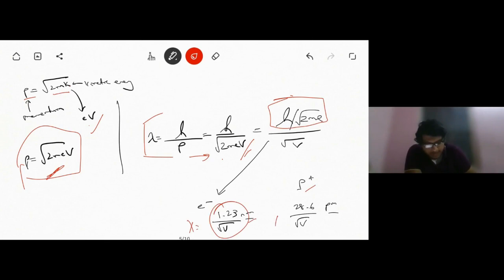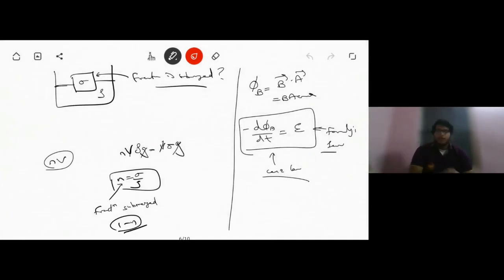For protons, lambda is given by 28.6 by root V picometers. Now suppose we have a body that is submerged under water, or it's basically floating on any fluid with a fraction of it submerged in it. What fraction is submerged? We could directly use this: if n is the fraction of the body submerged, then we could write this expression, from where we get that the fraction submerged is given by sigma by rho, where sigma is density of the body and rho is density of the fluid. The fraction exposed outwards, we will have to calculate 1 minus n.